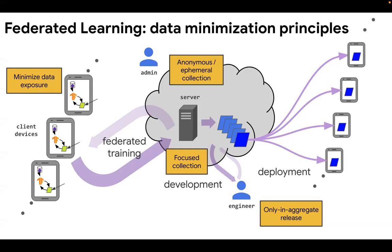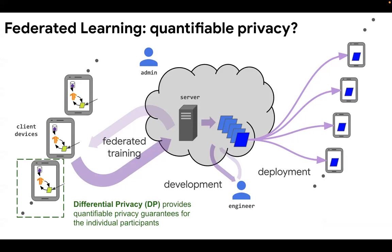But what if you want quantifiable privacy? We can apply a technique called differential privacy for this purpose. Applying DP to federated learning involves two steps in practice: first, bound the user contributions, and second, add some noise on top of the user contributions.